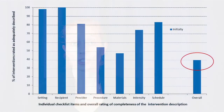After we had rated the completeness of the description of the intervention, we found that 39% of the interventions overall were rated as being adequately described. For those that had one or more missing items, we wrote to the authors with detailed questions asking for more information.